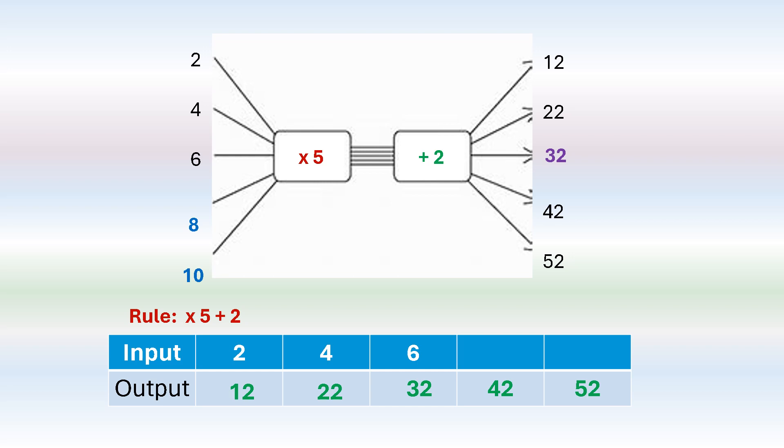Now we're going to do the reverse. We're going to use the inverse rule. So we're going to say 42 subtract 2 divided by 5 is equal to 8. And 52 subtract 2 divided by 5 is equal to 10. And that's how we use the inverse to find the answers.